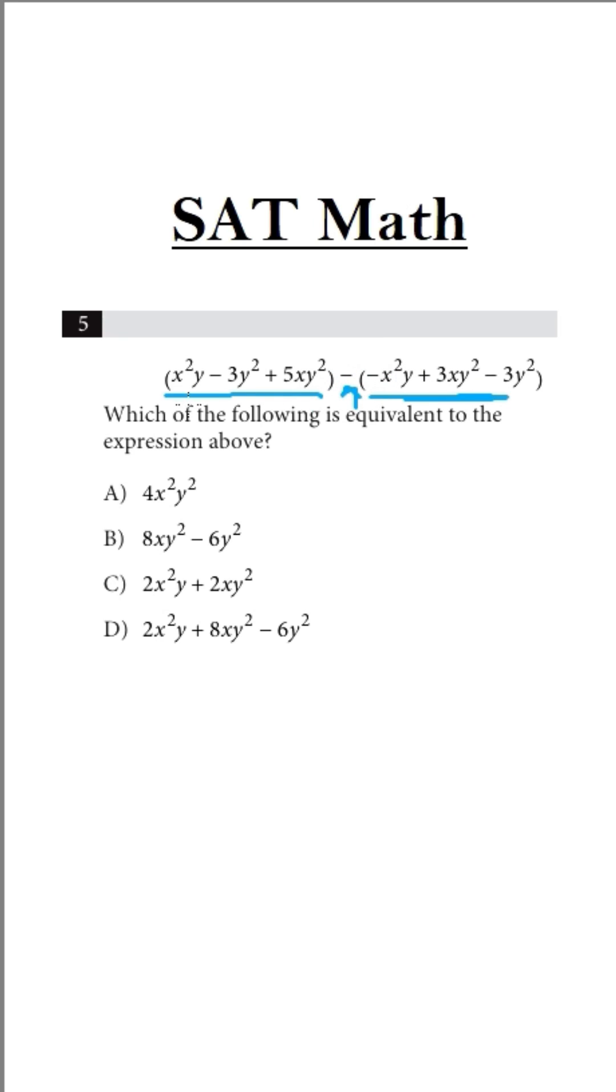So x squared y and here we have also x squared y, and this minus and minus they become plus. So x squared y plus x squared y is 2x squared y, so these two are gone.